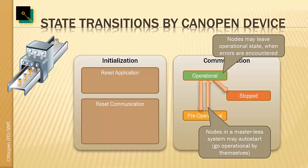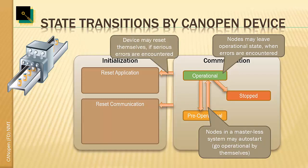A network management master would typically try to set the device back to operational, or first check error registers to see what happened, or potentially give the device a reset to start over. When a device encounters a really serious error indicating a hardware fault or software pointer error — something severe enough to trigger a watchdog on an embedded device — the device simply resets itself. From the CANopen side, what is recognized is that the device started over and transmitted a boot-up message, as if a reset command had been sent, but the device triggered it internally because it could not recover from the problem.